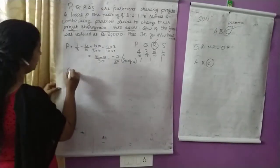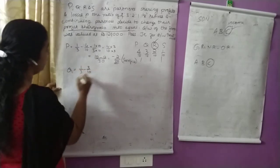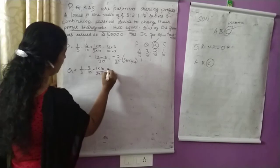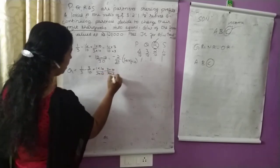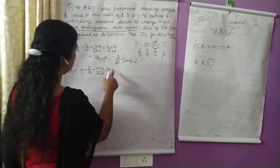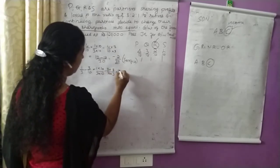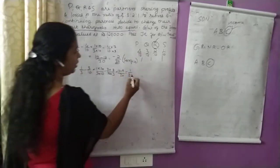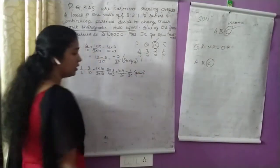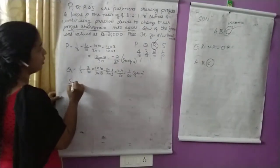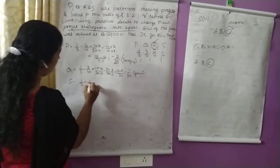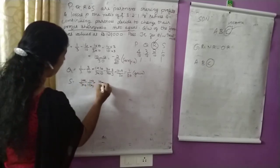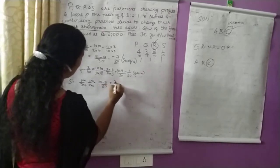For Q: 1 by 3 minus 3 by 10. The common denominator is 30. So 10 by 30 minus 9 by 30 equals 1 by 30. For S: 10 by 30 minus 3 by 30 equals 7 by 30. The gain ratio results are: P sacrifices 2 by 30, Q gains 1 by 30, S gains 7 by 30.